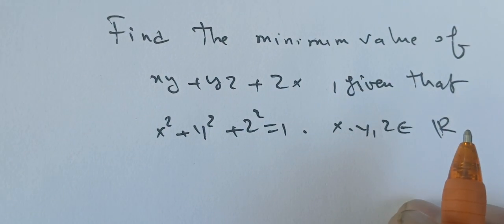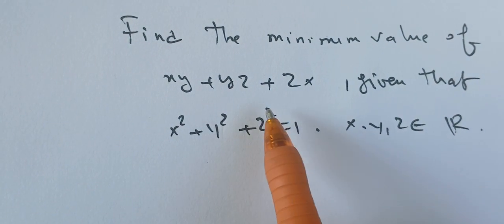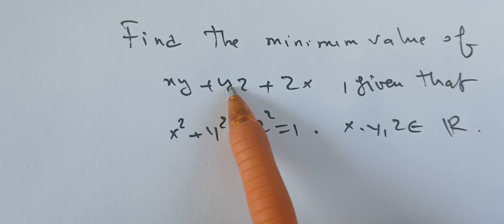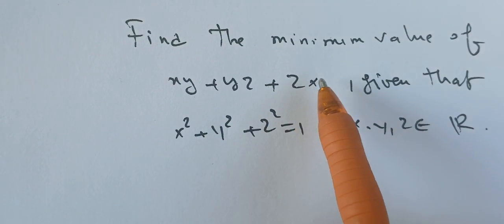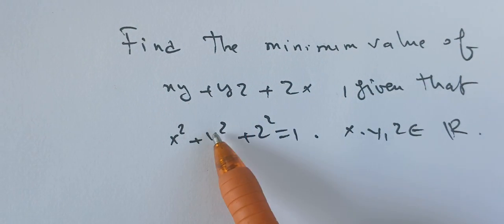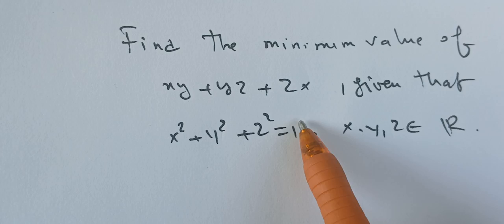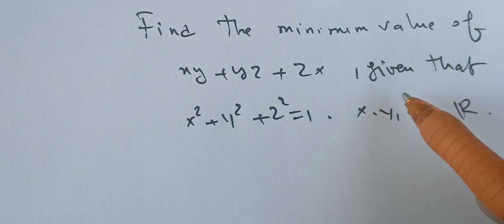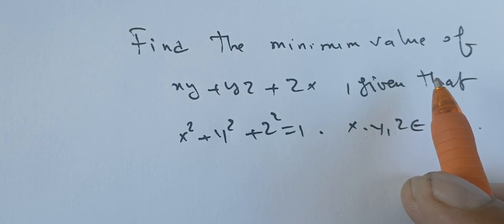In this question, we're going to find the minimum value of xy+yz+zx, given that x²+y²+z²=1 and x, y, and z are in R.